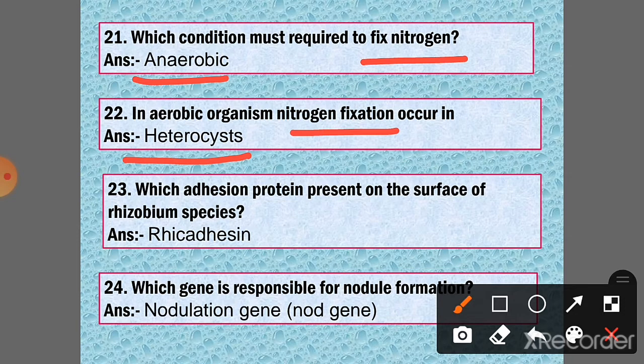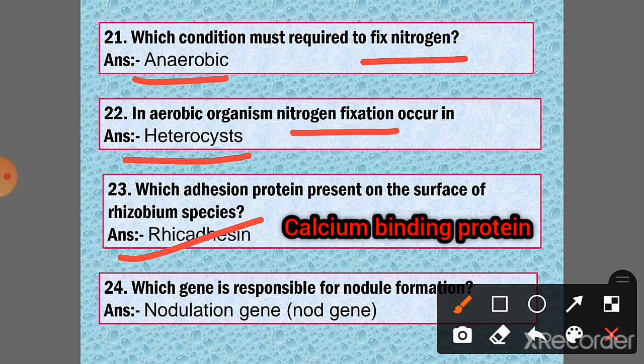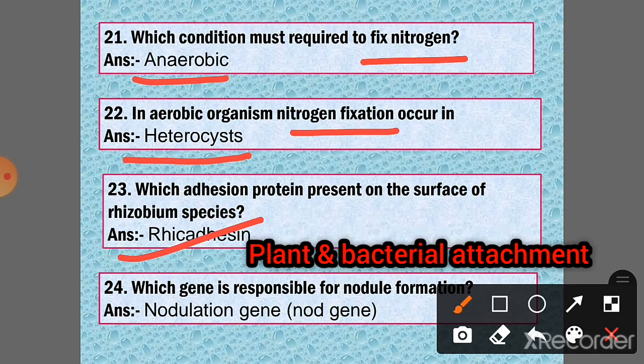Question 23: Which adhesive protein present on the surface of rhizobium species? Answer: Lectin. Lectin is a calcium-binding protein that plays an important role in plant and bacterium attachment.